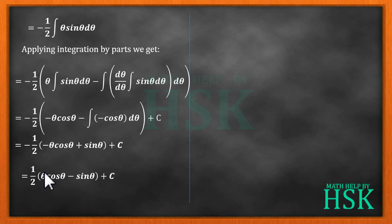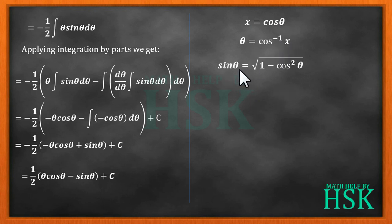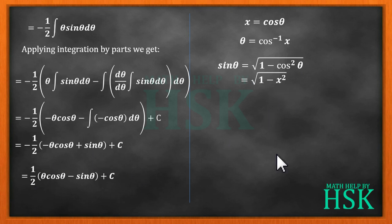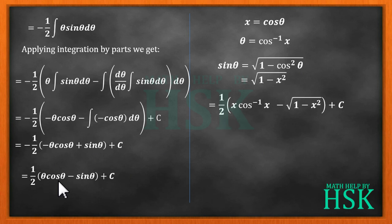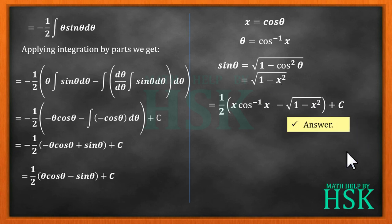Now we convert the value of theta back in terms of x. Since x was assumed equal to cos theta, theta equals cos inverse x. We can also write sin theta as square root of (1 minus cos squared theta), which equals square root of (1 minus x squared). So the final answer is (1/2) times [x times cos inverse x minus square root of (1 minus x squared)] plus c.